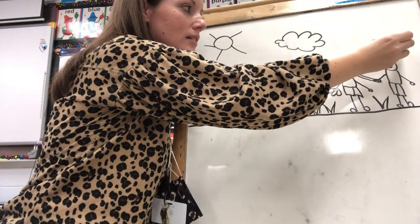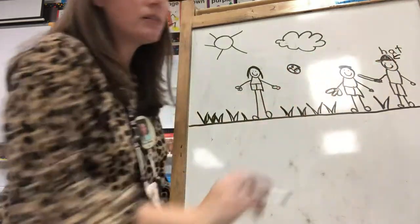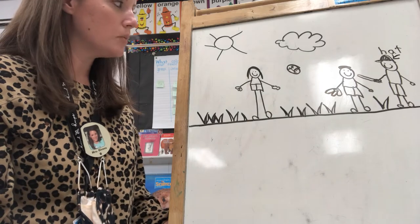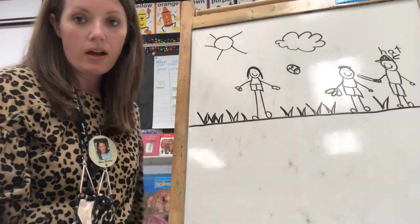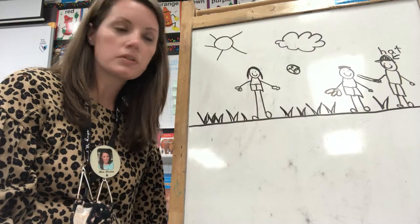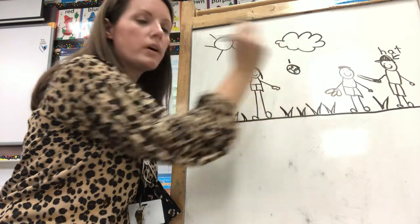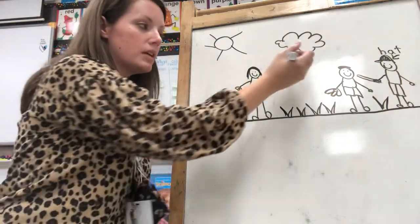We labeled the hat and I made a little arrow pointing to the hat. What else could I label? How about the ball? Now I have read lots and lots of books about balls, and I know that ball is spelled B-A-L-L. What sound do you hear at the beginning of ball?